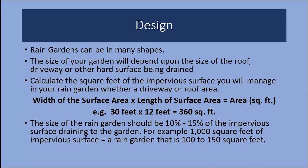Your rain garden can be any number of shapes: crescent, kidney, or long and narrow if sited near a sidewalk or parking strip. The size will depend upon the size of the area being drained. To calculate, compute the square feet of impervious surface being drained — width times length gives the area. For example, if draining a 30-foot by 12-foot space, that's 360 square feet. The rain garden should be about 10 to 15 percent of that impervious surface, so a 1,000-square-foot drainage area would require a rain garden of 100 to 150 square feet.